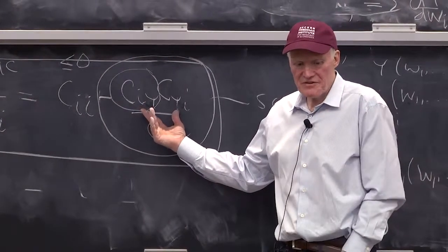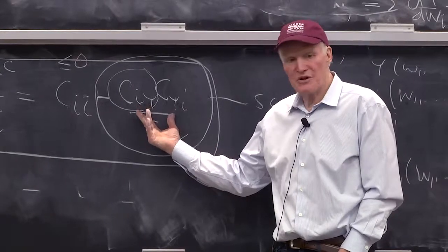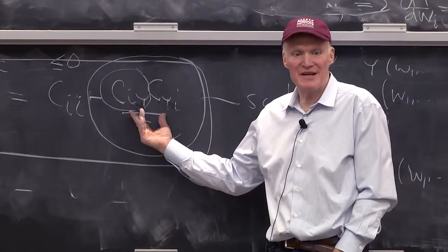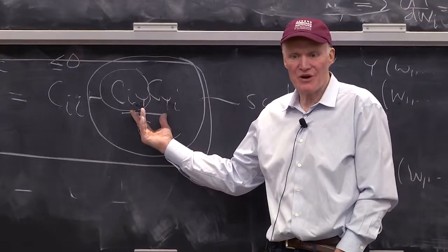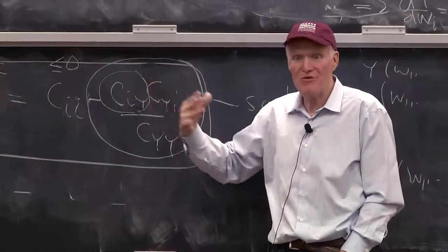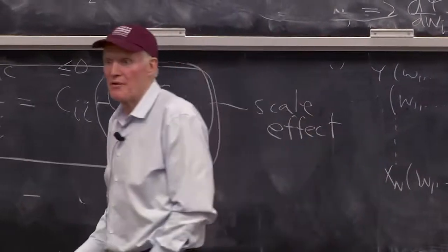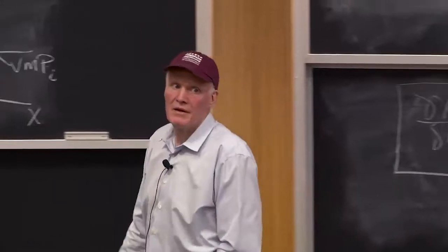And the difference for the consumer is utility level wasn't a choice variable. They didn't get to say, well, geez, the marginal cost of utility has gone down. Let me get more utility, right? They can't move in that direction. If they could, then you'd have this same property going on in the consumer's problem.